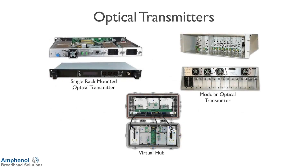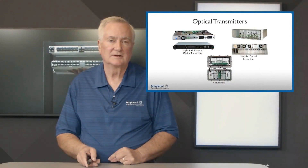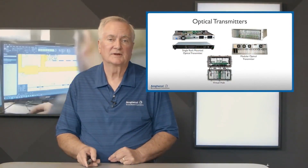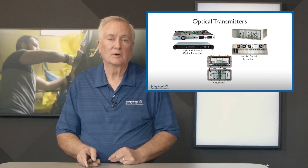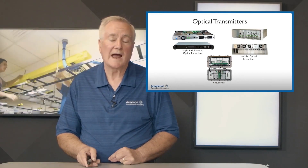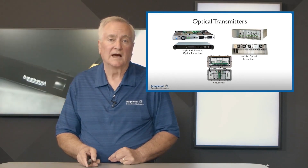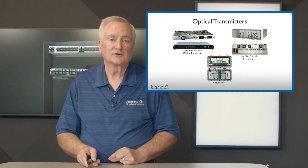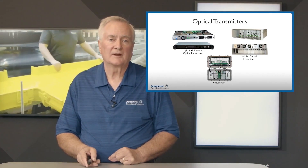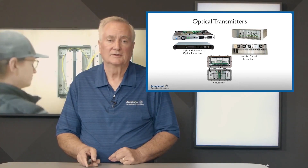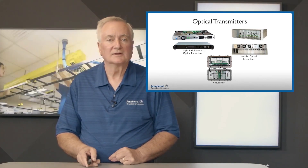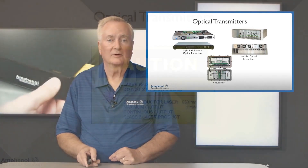Here I'm showing examples of some optical transmitters. On the left is a single rack-mounted optical transmitter, which takes up a lot of space. The modular optical transmitter allows you to put multiple transmitters in one rack. Down at the bottom is the virtual hub, which may be hanging on a strand or in underground vaults, and comes in a housing that's easily accessible through a lid.